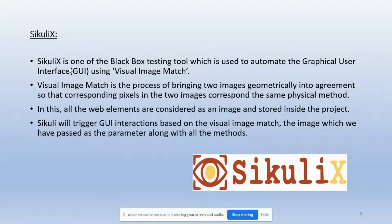Sikuli X is a black box testing tool which is used to automate the graphical user interface using visual image match. Visual image match is the process of bringing two images into agreement so that corresponding pixels in the two images correspond to the same physical point. In this tool, all web elements are considered as images and stored inside the project. It will trigger UI interactions based on visual image match.